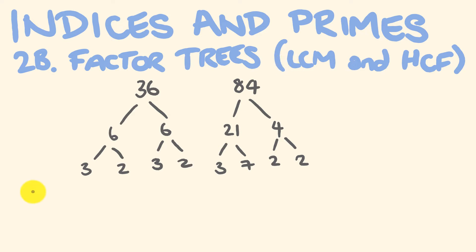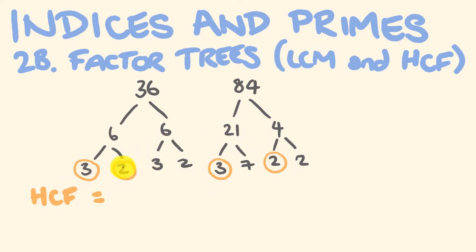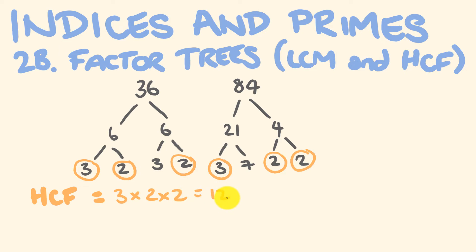First I'm going to work out the highest common factor and show you how to do this. The highest common factor is the highest common number that goes into both of these numbers. We look for where we have overlap — the similar numbers. There's a 3 here and a 3 here. There is a 2 here and a 2 here. There's no 7 in both, but there is a 2 here and a 2 here. We just multiply these numbers: 3 times 2 times 2. So 3 times 2 is 6, times 2 is 12. The highest common factor is 12.